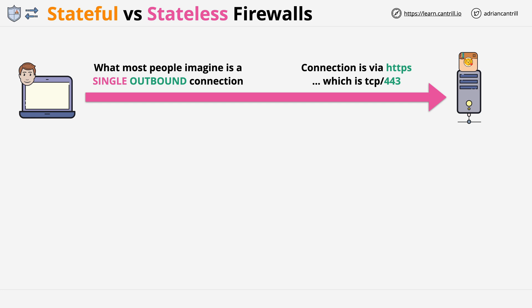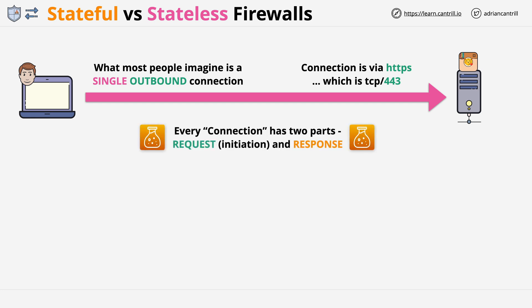First, we have the request part, where the client requests some information from a server — in this case, some cat images. Then we have the response part, where that data is returned to the client. These are both parts of the same interaction between the client and server, but strictly speaking, you can think of these as two different components.